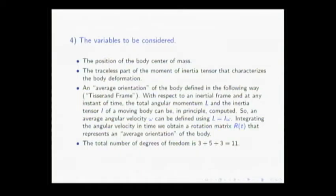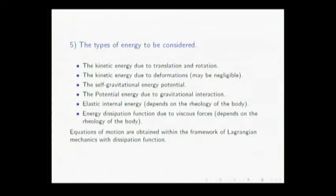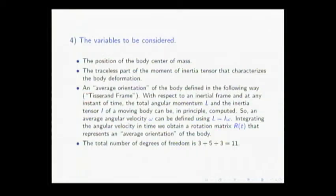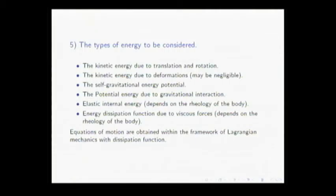With this, we have only 11 degrees of freedom: 3 for the position of the center of mass, 5 for the traceless part of the moment of inertia (a 3×3 symmetric matrix has 6 independent components, minus the constant trace gives 5), and 3 rotation degrees of freedom. To construct the equations of motion, I use Lagrangian modeling with a dissipation function, considering all energies that are important.